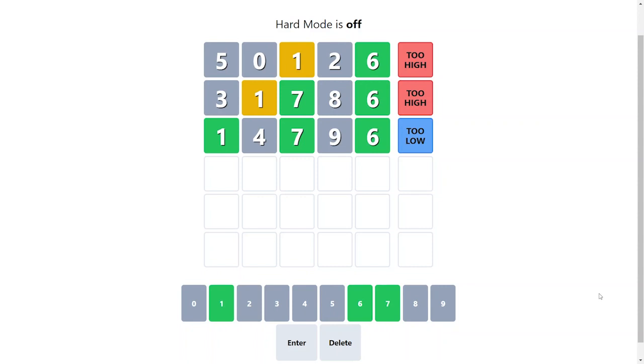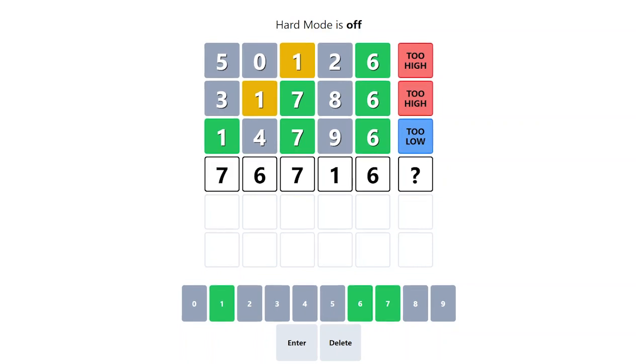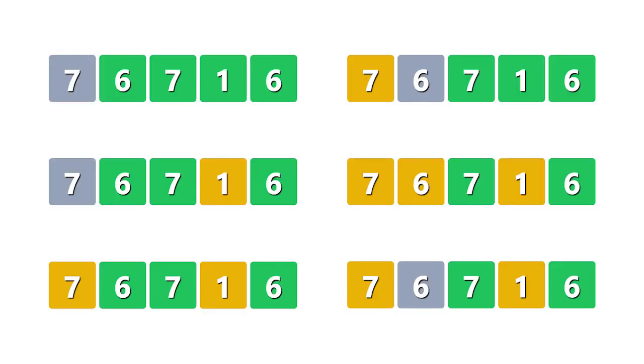So one possible answer is 76716. The second digit is either 6 or 7, so the first 6 in this guess will tell you which one it is, and you can also see that this guess helps you deduce what the fourth digit is as well. This shows that the fourth guess gives each of the remaining solutions its own coloring, so we get a score of 5 across the board.